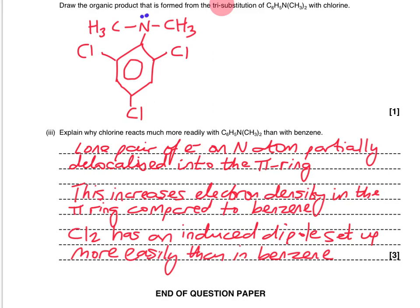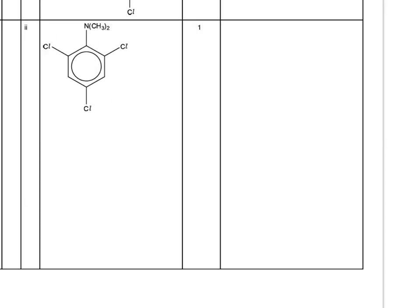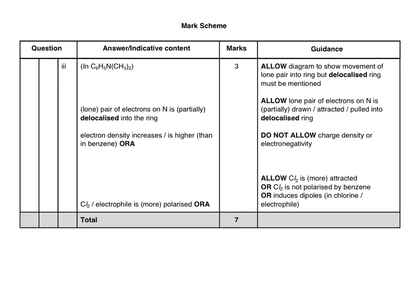Checking the mark scheme: we got all those marks. Note it doesn't allow the three-chloro product at position 3 because that would suggest the wrong directive effect - the correct product has chlorines at the 2,4-directing positions. We talked about a lone pair of electrons on the nitrogen being partially delocalised into the ring, increasing electron density. Using the word 'delocalised' and discussing polarisation and inducing a dipole secured the marks. Hopefully this clip has been a useful introduction to directing groups - thanks for listening.